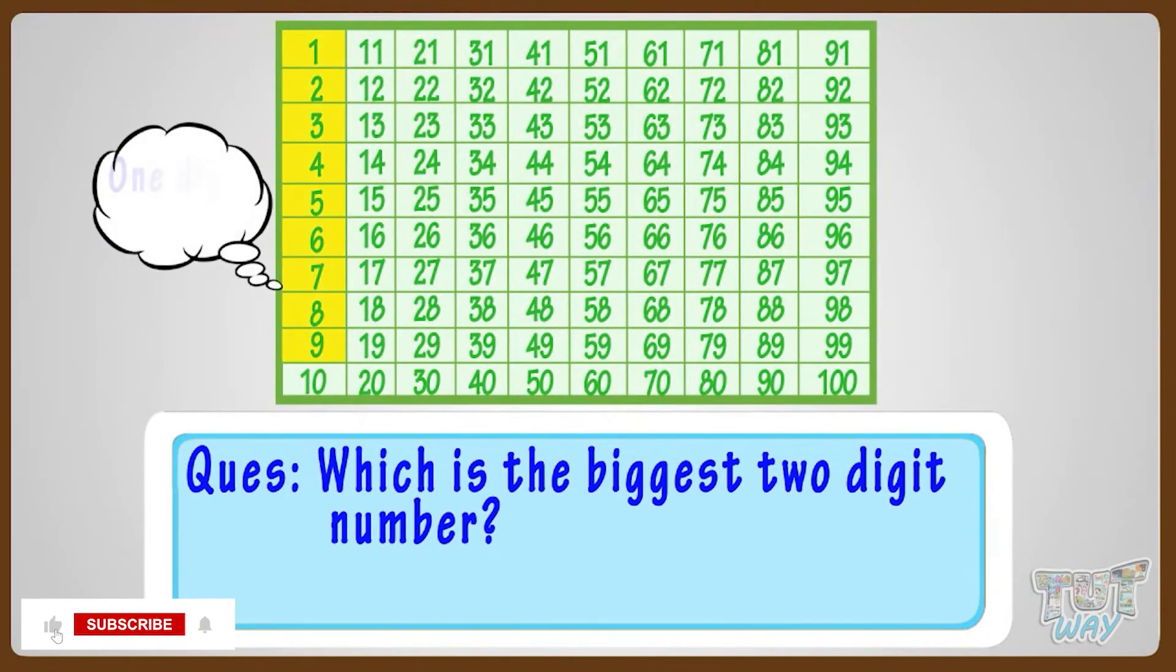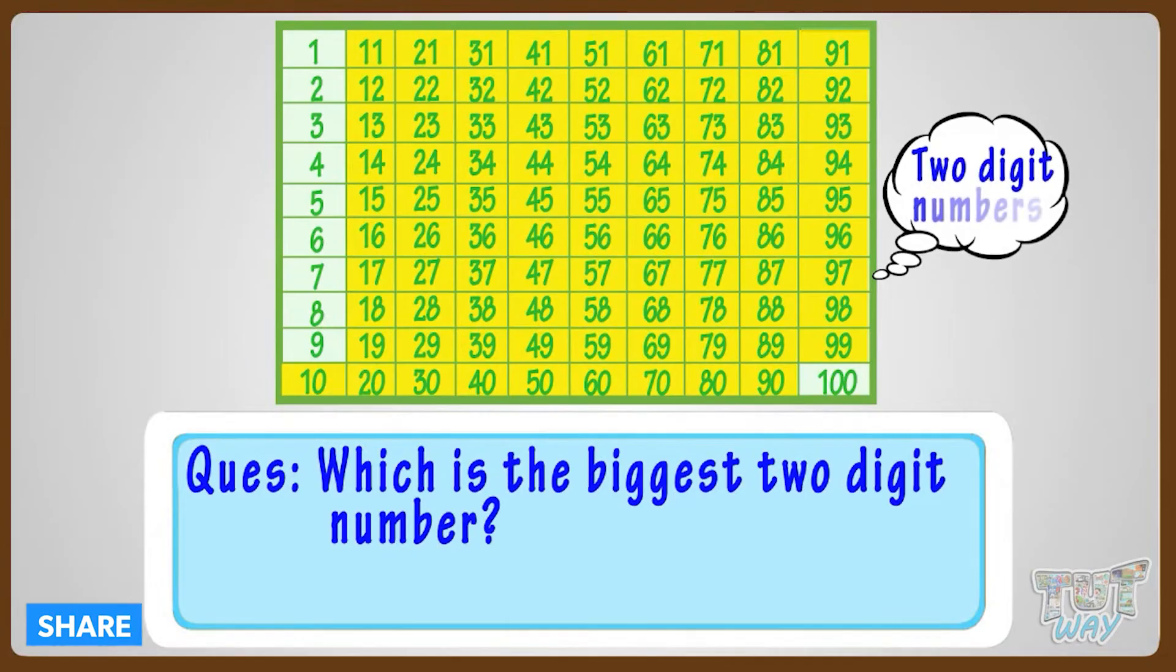Up to 9, we have one-digit numbers. And from 10 to 99, we have two-digit numbers.